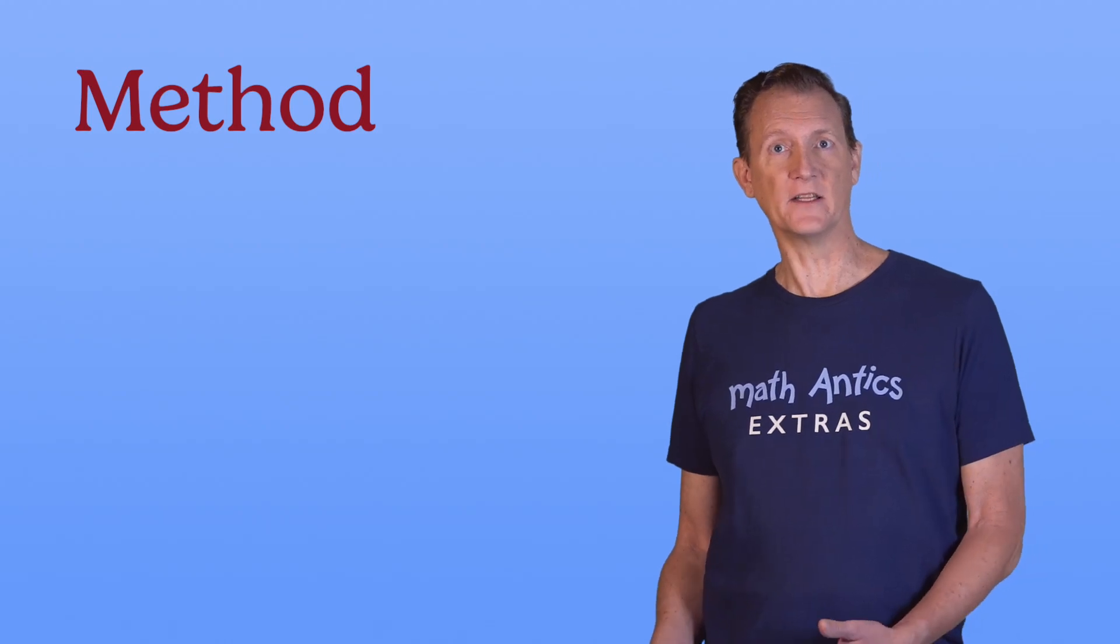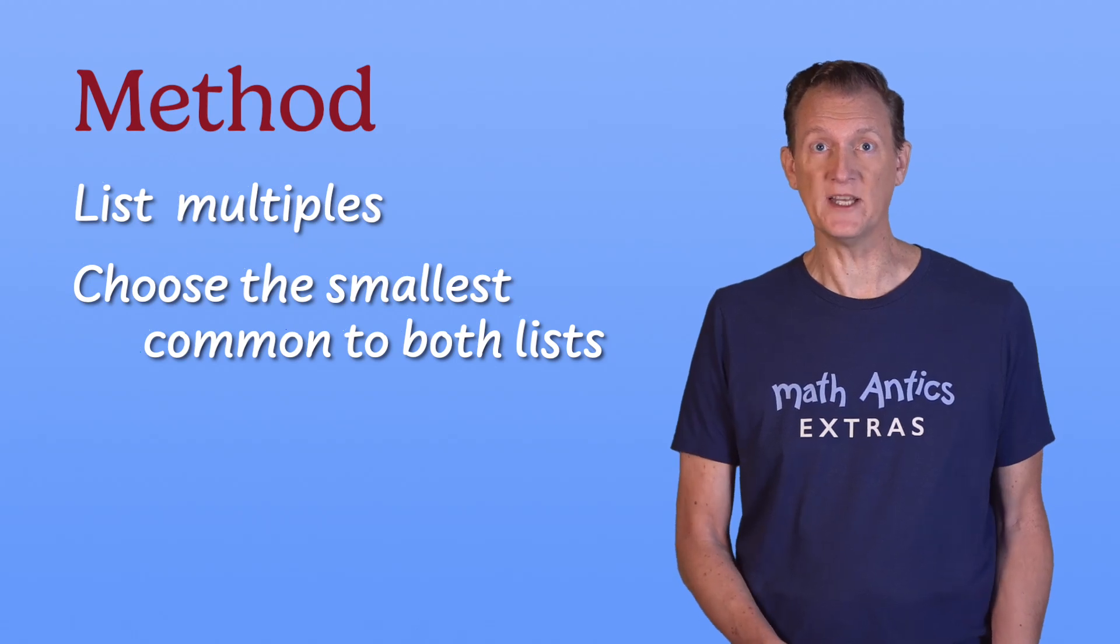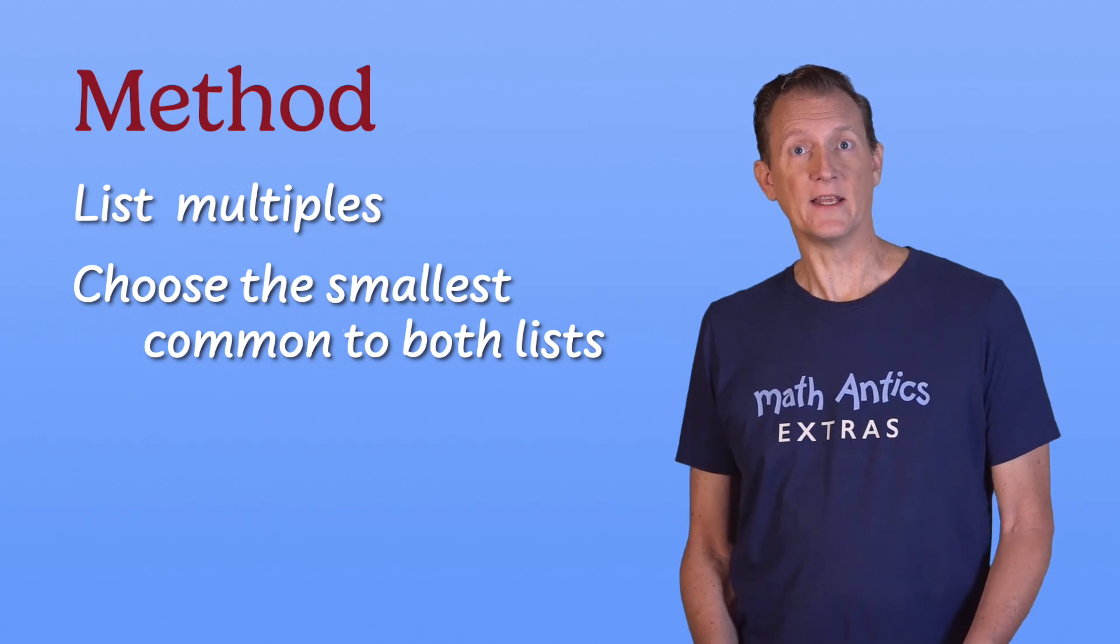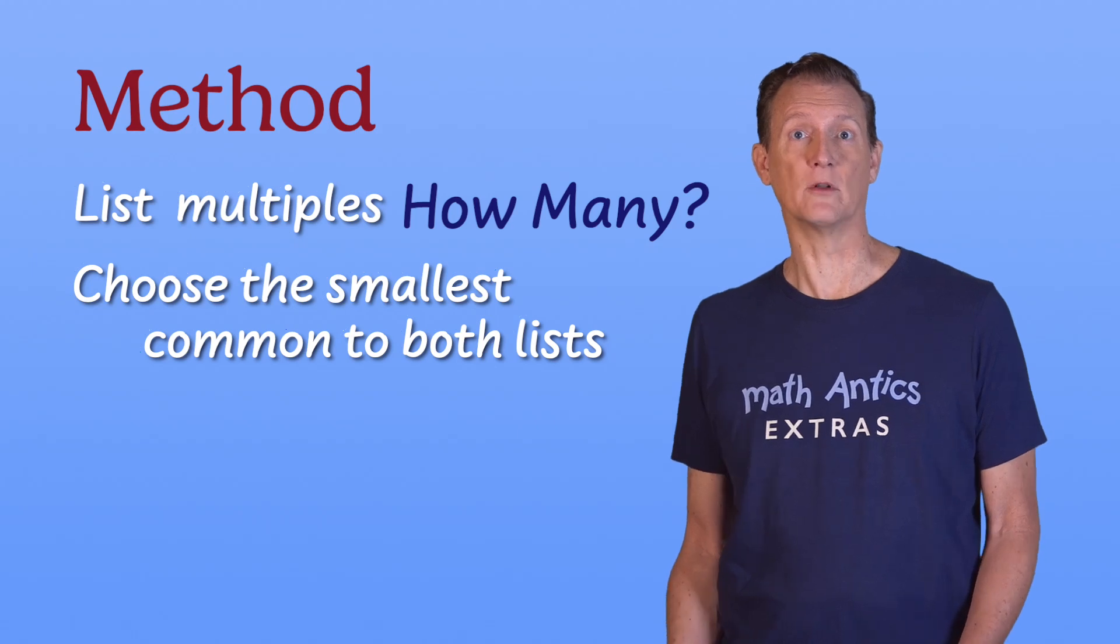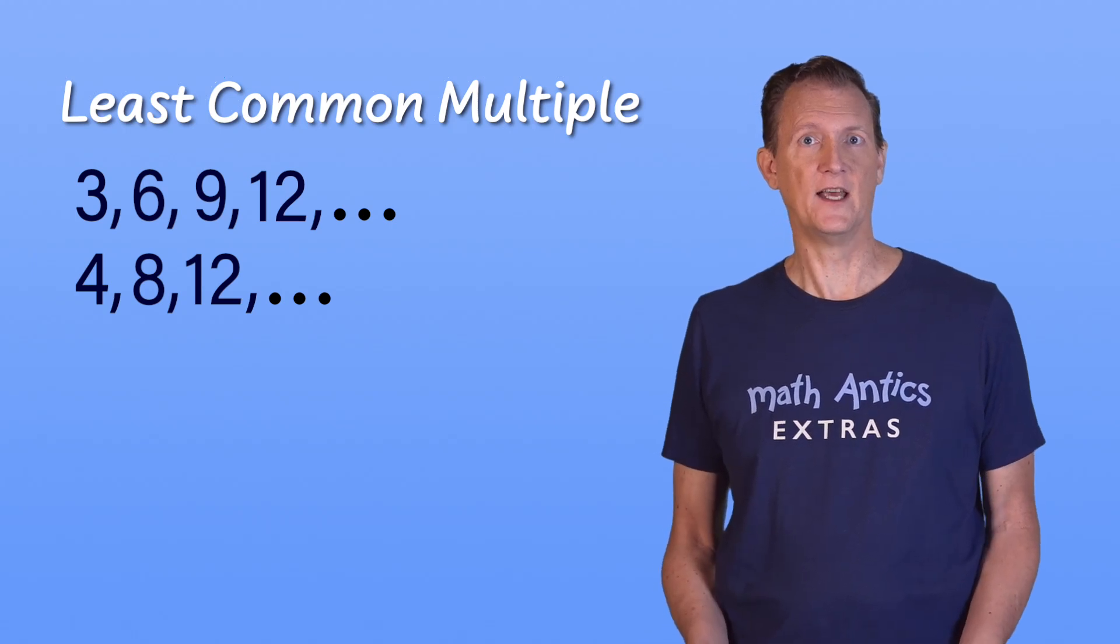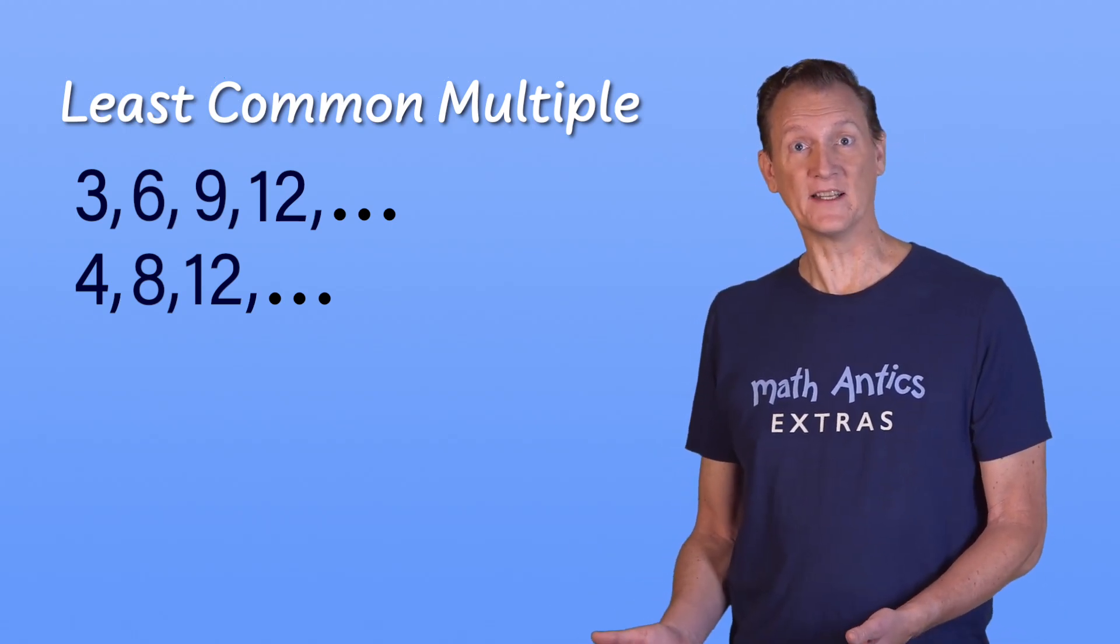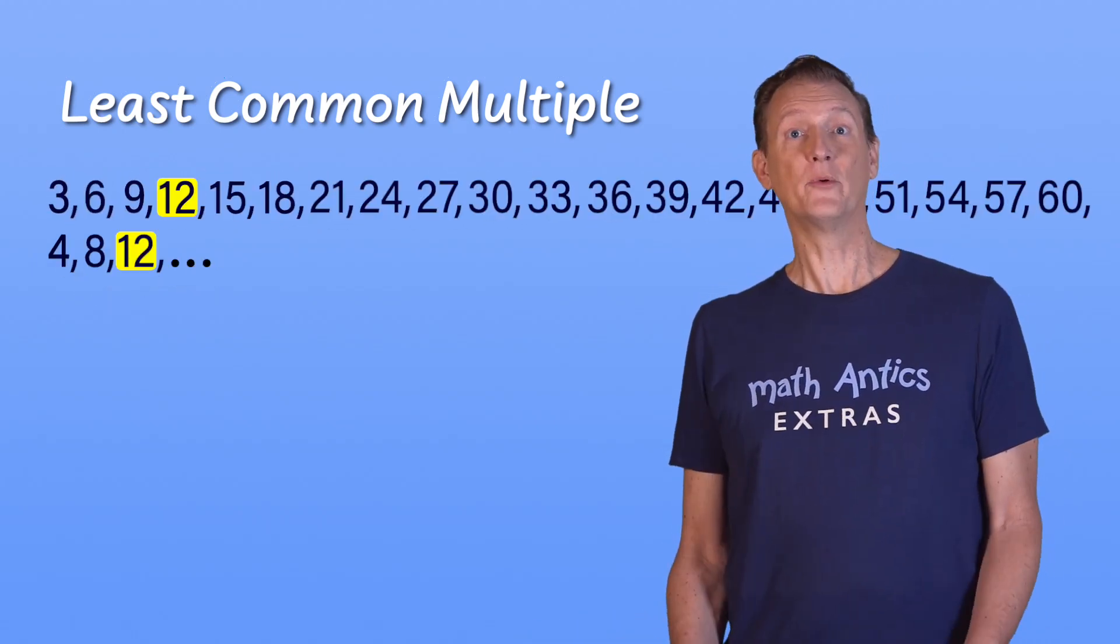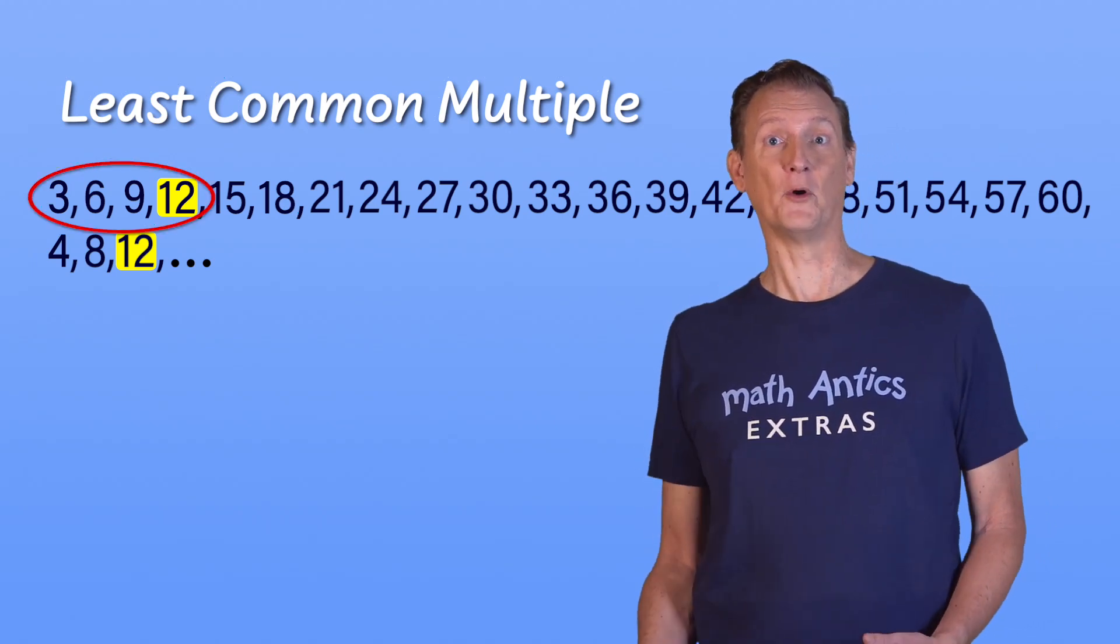This method of finding the least common multiple by making lists of multiples and then choosing the smallest one common to both lists is easy to understand, but it has a few drawbacks. The first drawback is that you don't know upfront how many multiples you'll need to list in order to find the least common multiple. In this example, we could have stopped as soon as we got to the multiple 12 in each list, but we didn't know that when we started. What if you had started by listing the first 20 multiples of 3, and then moved on to listing multiples of 4? That would result in a lot of unnecessary work, since in hindsight you only needed to list the first 4 multiples of 3.